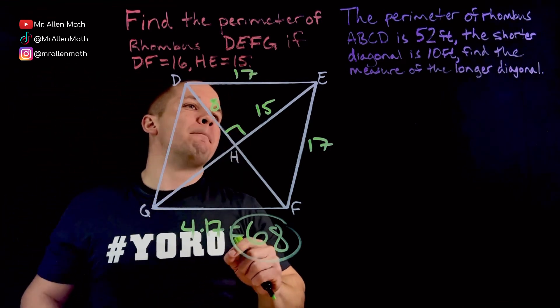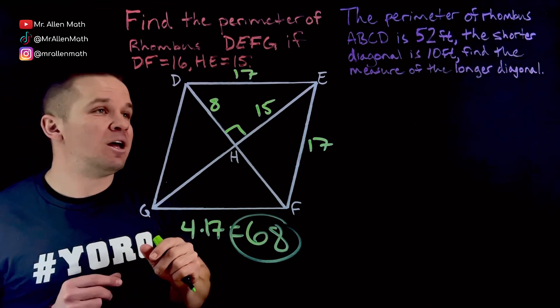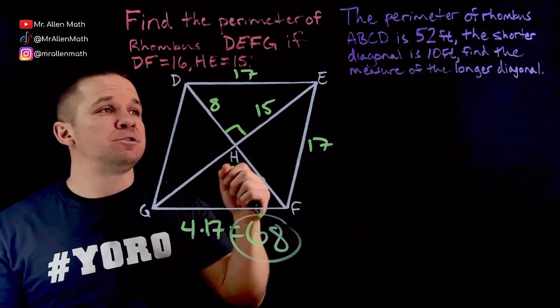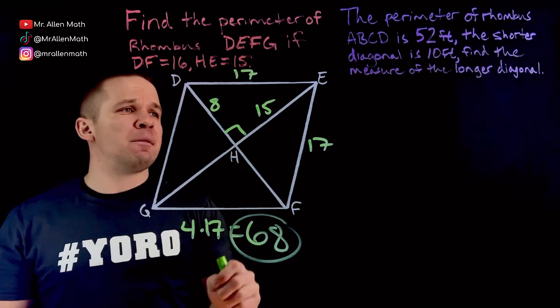We have another problem right over here, but it has, uh-oh, no diagram. That's scary, right? Okay, well the perimeter of the rhombus ABCD is 52 feet. The shorter diagonal is 10 feet. Find the measure of the longer diagonal.